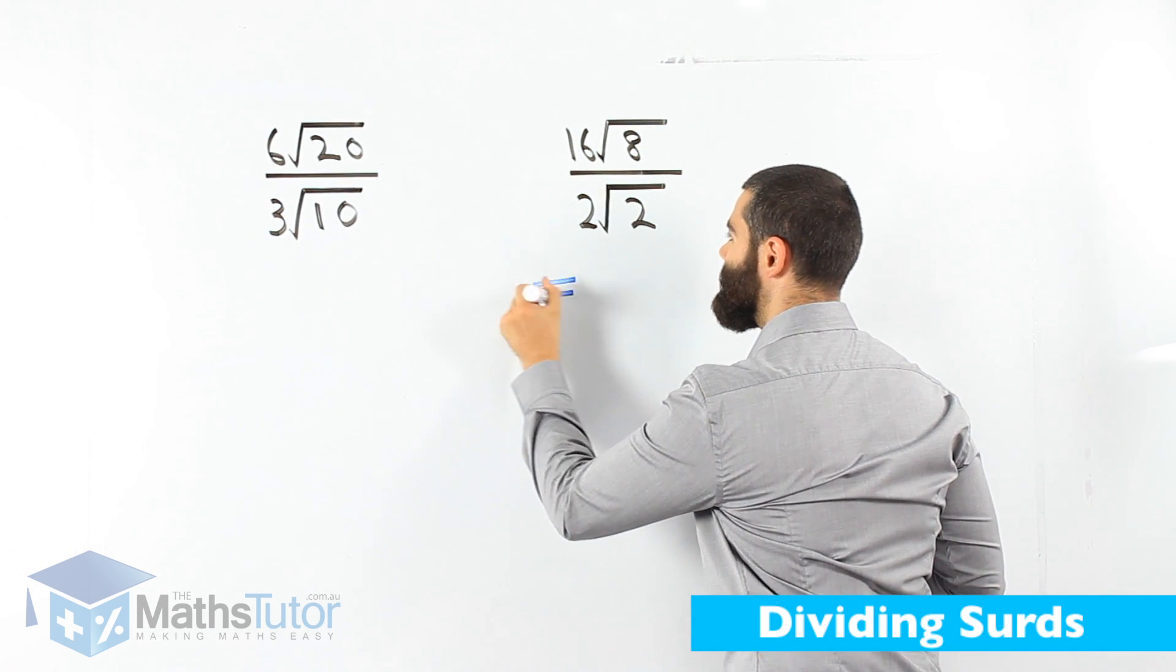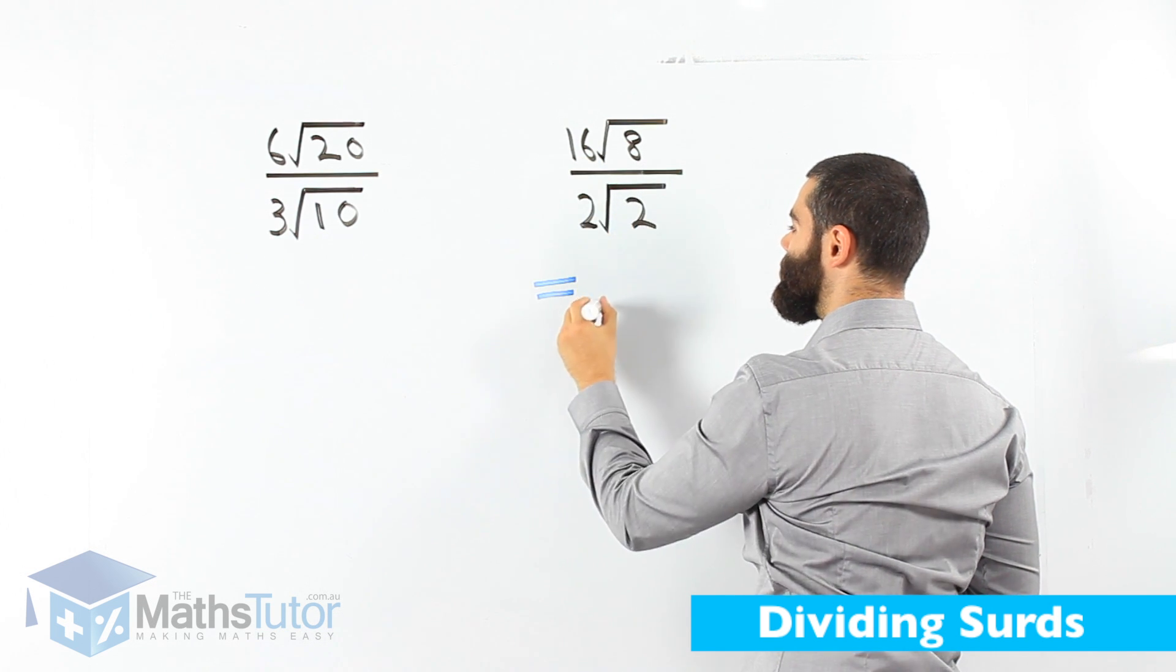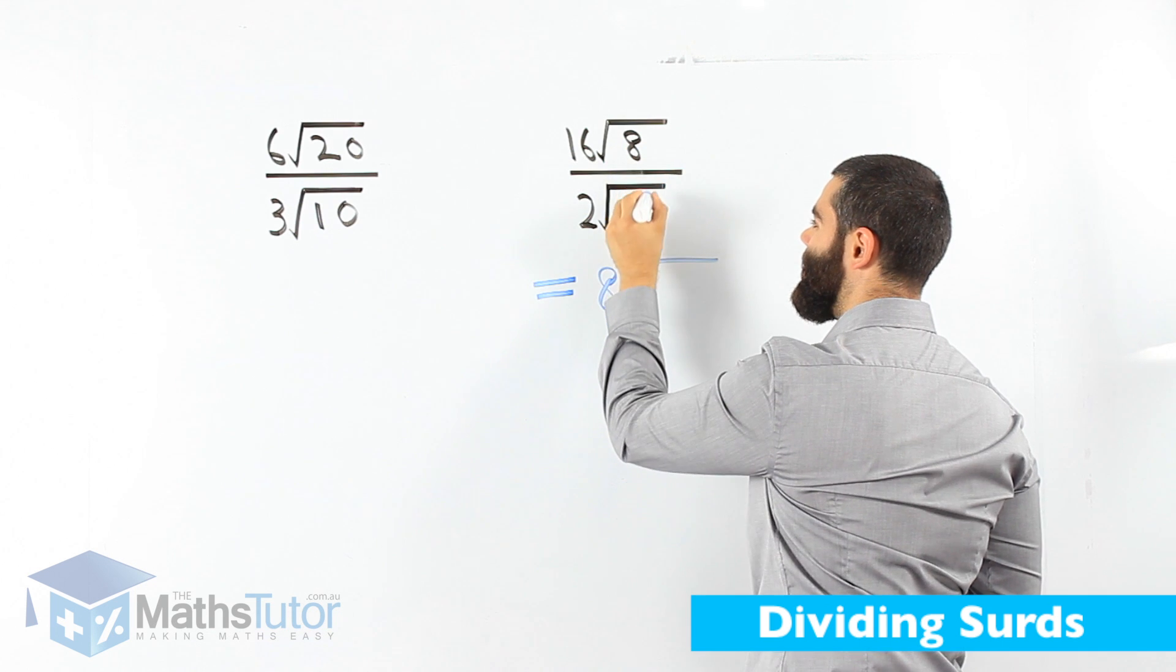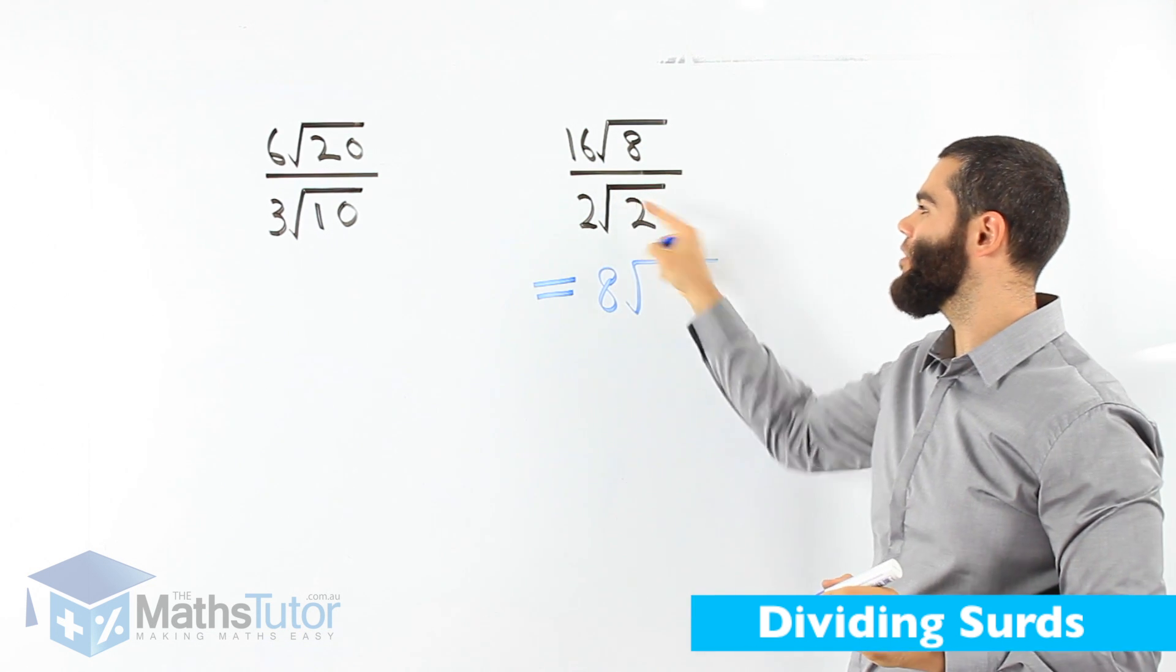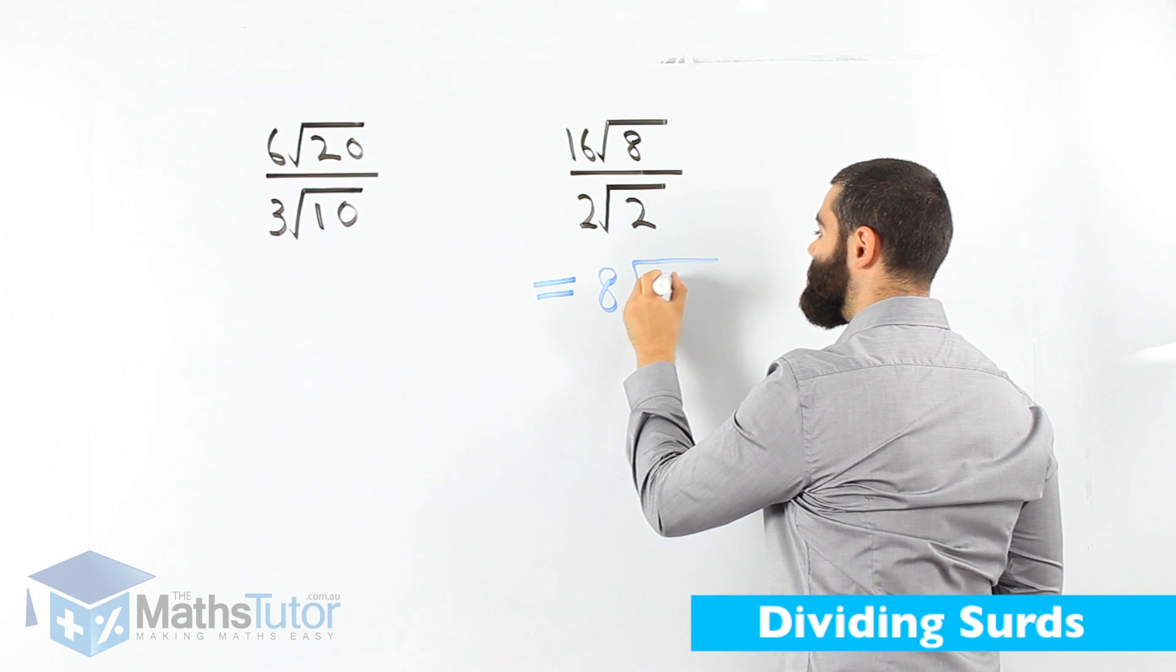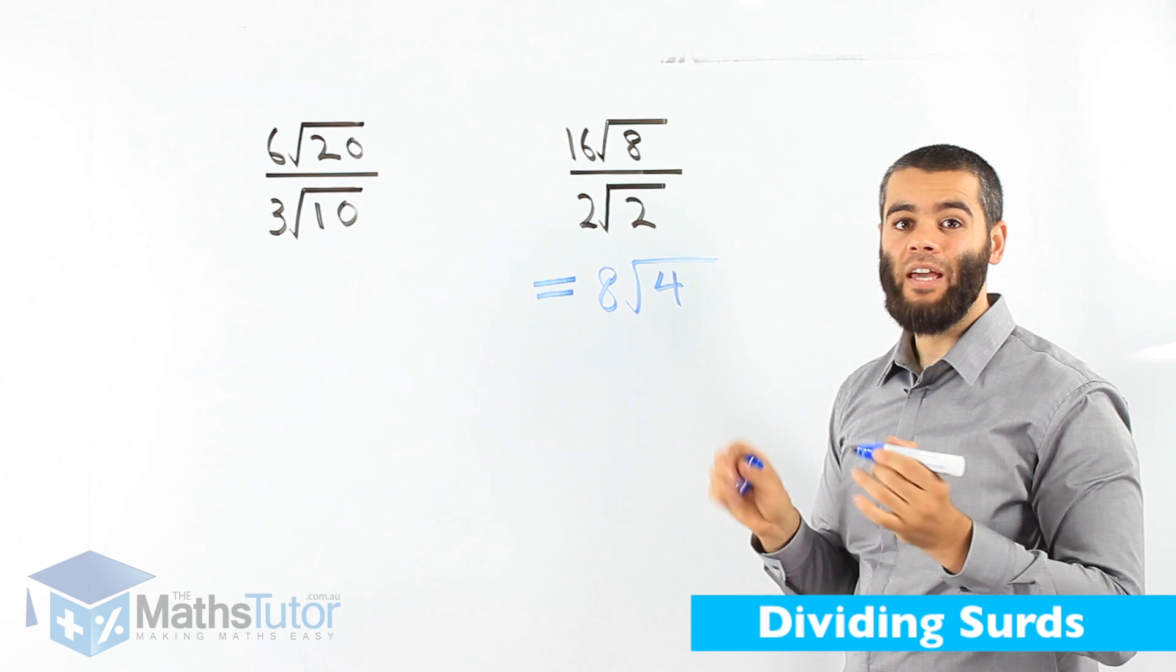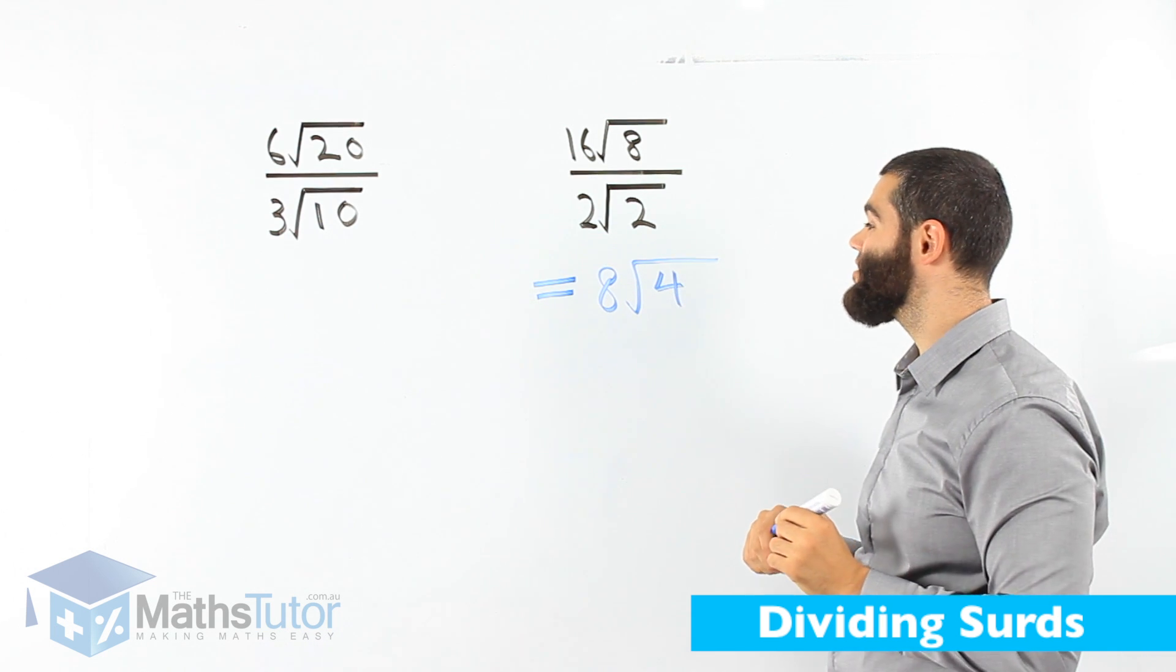So our answer here, 16 divided by 2, 8. And 8 divided by 2, square root 8 divided by square root 2 simply is going to be 4. Now what do we do? Can we simplify? Well, in this case, yes we can.